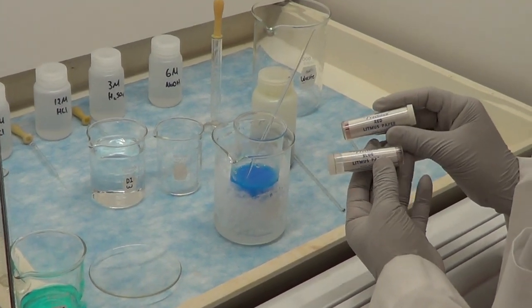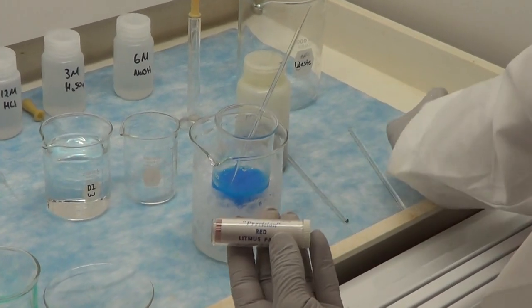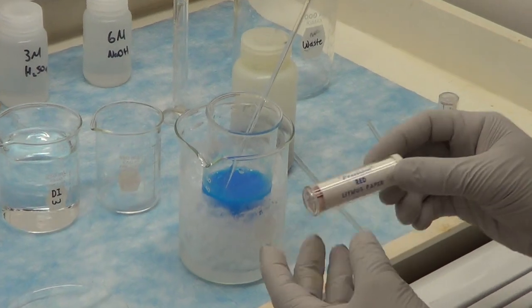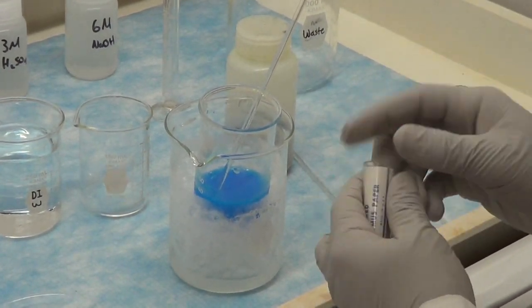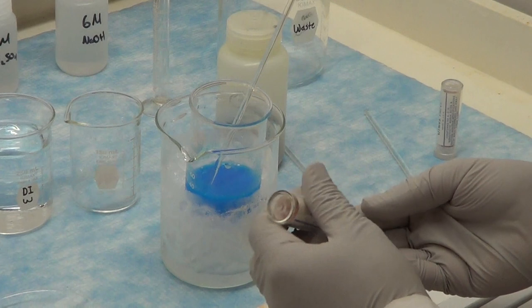We will then use the litmus paper to check the basicity of the supernatant liquid. We will take a strip of red litmus paper and place it on a watch glass.